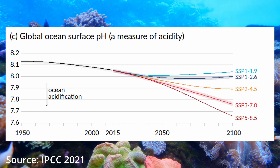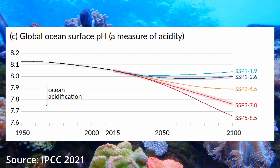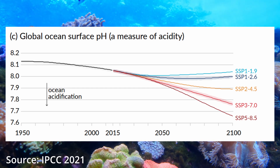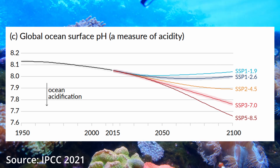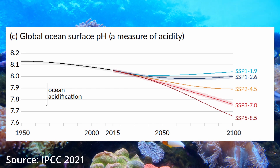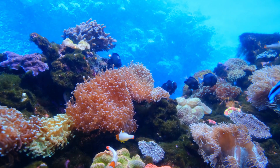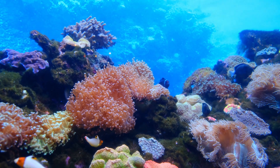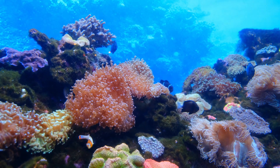Since pre-industrial times, the pH of the ocean has decreased by around 0.1, which may not seem significant, but as the scale is logarithmic, it actually represents a 30% increase in acidity. I have put other videos in the description that also explain these more complex processes in detail.